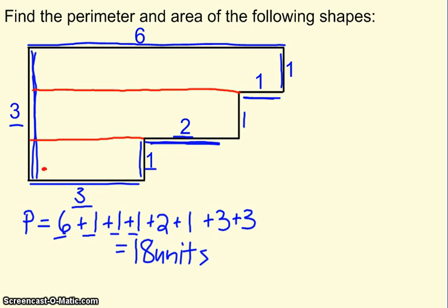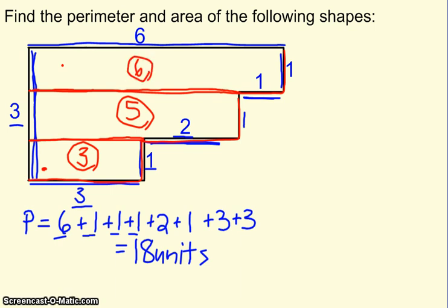Let's go ahead and solve. If I start with my rectangle on the bottom, it looks like I have a base of 3, a height of 1. 3 times 1 is 3. If I look at the rectangle in the middle, it looks like I've got a base of 5, and a height of 1. 5 times 1 is 5. Then my rectangle on the top has a base of 6, a height of 1. 6 times 1 is 6. So I found the individual areas of each piece. Now you add them up. 6 plus 5 plus 3 gives me 14 units squared.